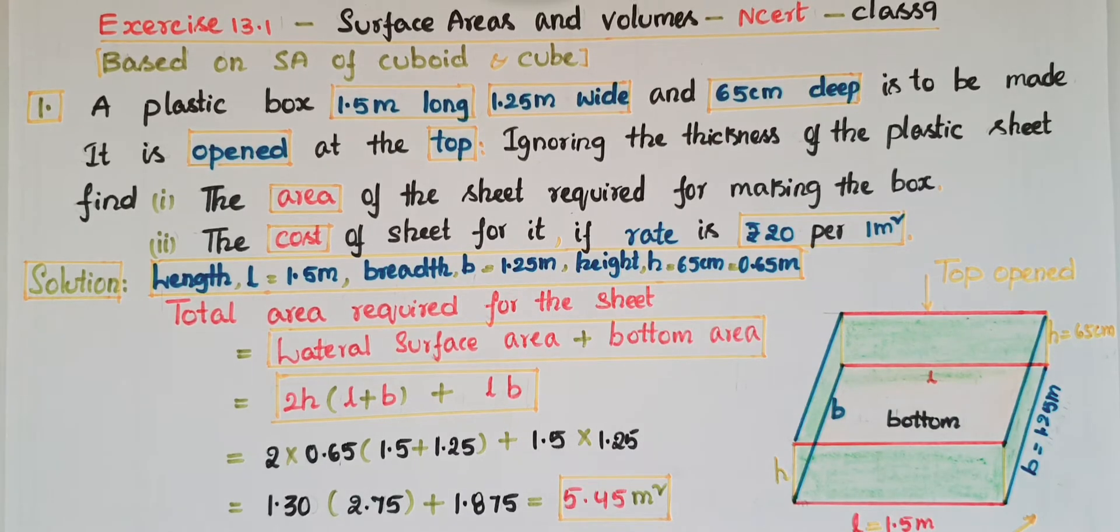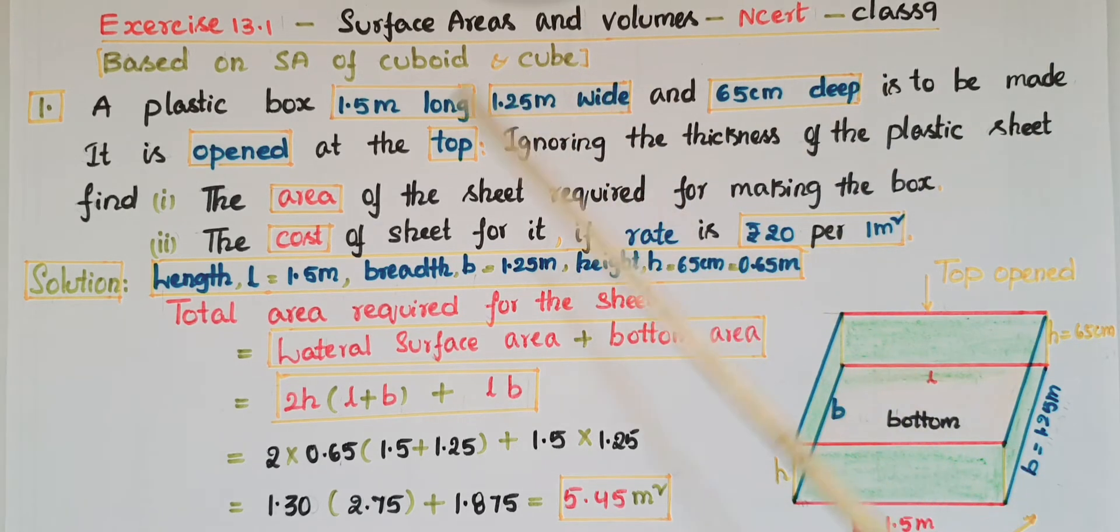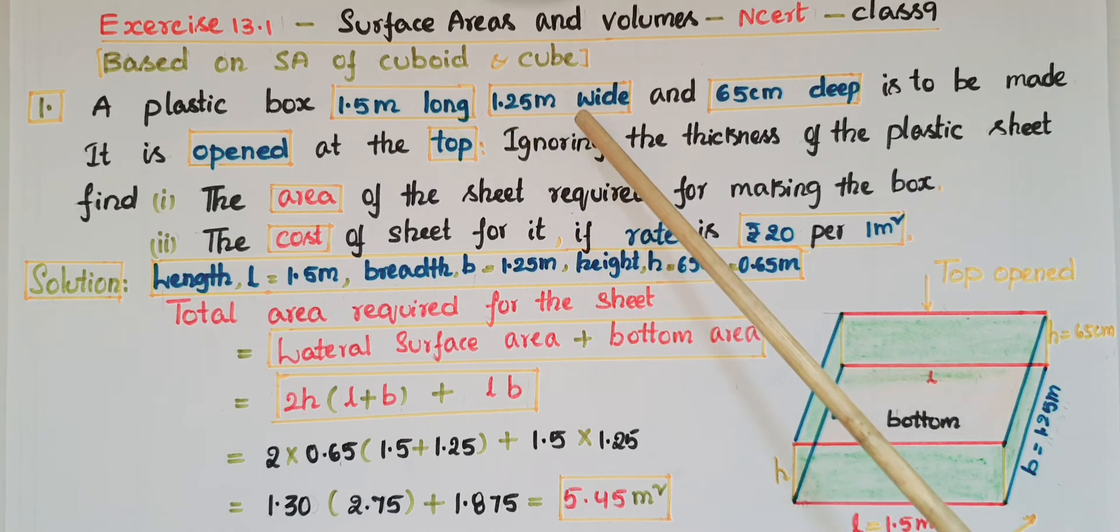Hello everyone, today I am going to tell the solutions of Exercise 13.1 from Surface Areas and Volumes from NCERT Class 9. This is the first problem: A plastic box 1.5 meters long, 1.25 meters wide, and 65 centimeters deep is to be made.